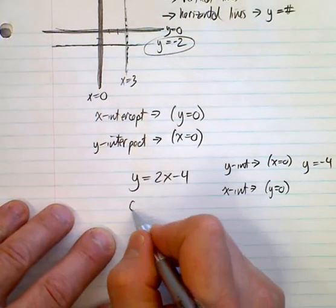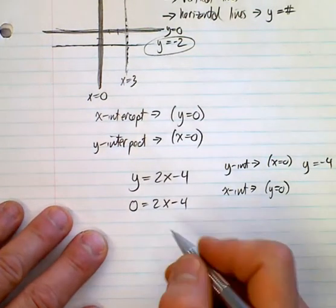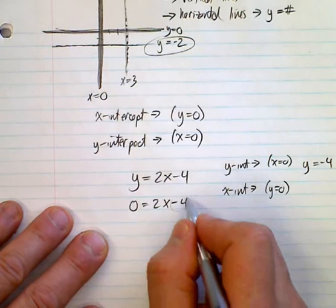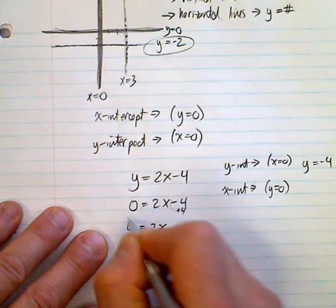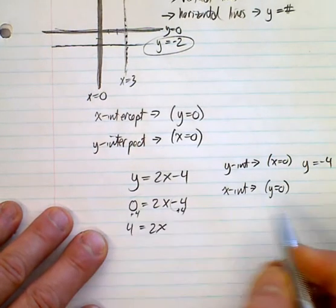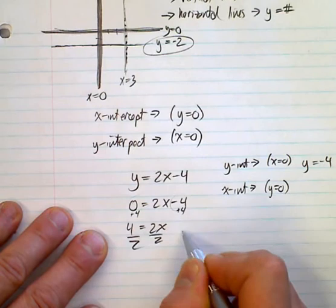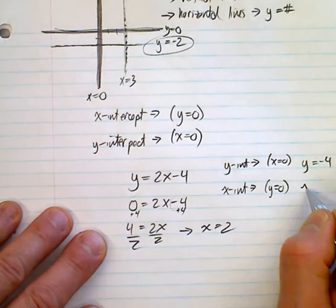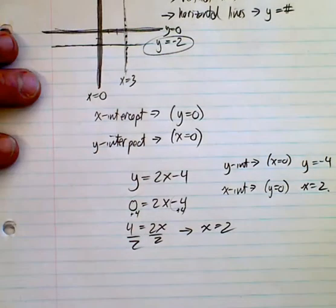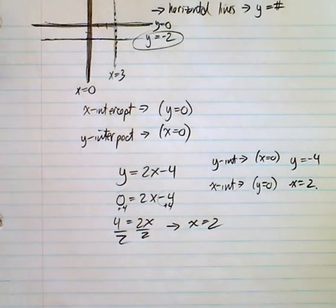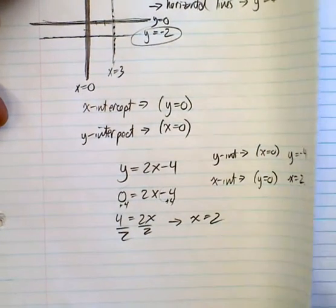If you're looking for the x-intercept, you make y equal 0. So: 0 equals 2x minus 4. Then we solve for x — bring that over, 4 equals 2x, add 4, then divide by 2, and you get x equals 2. So this is how we find our x and y-intercepts. Just a quick reminder — hopefully that helps.